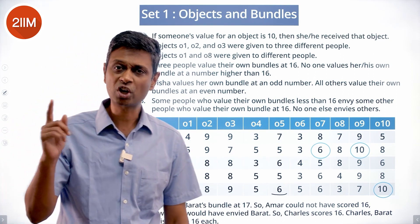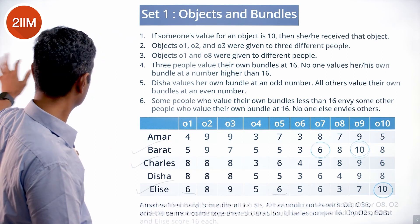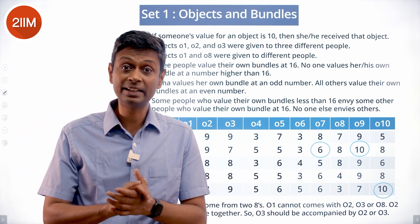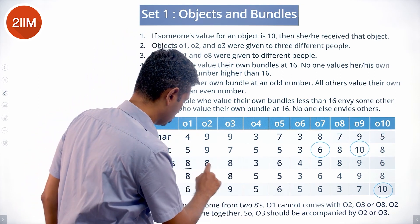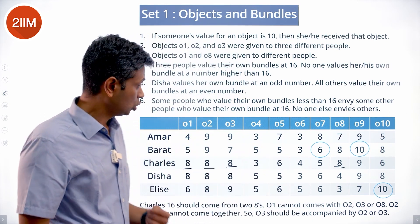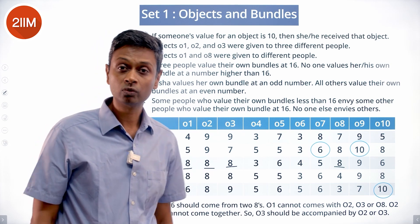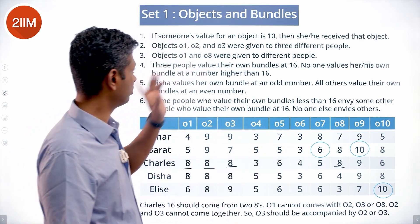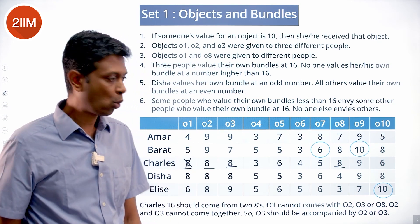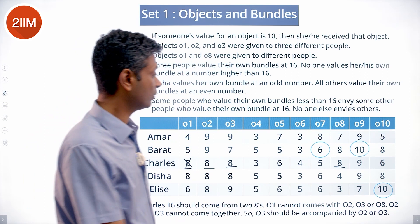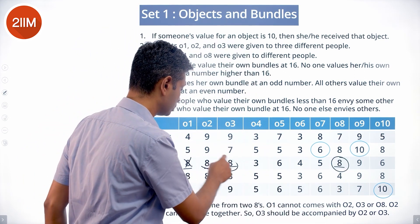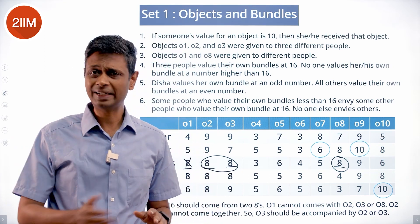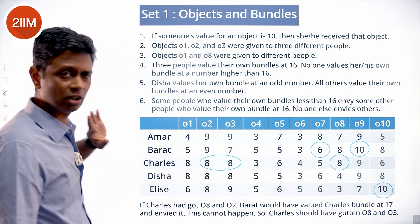Charles has got 16. Charles has not got a 10, so he could have got two 8s — 8 and 6 or 8 and 4 don't work. He should have got two 8s. There are 8s at O1, O2, O3, and another object. But O1, O2, O3 go to different people, and O1 and O8 go to different people, so O1 is out. O2 and O3 go to different people, so Charles has got O8 and one of O2 or O3. He couldn't have got O2 and O3 together, and couldn't have got O1 and anything else. So it is O8 and either O2 or O3.